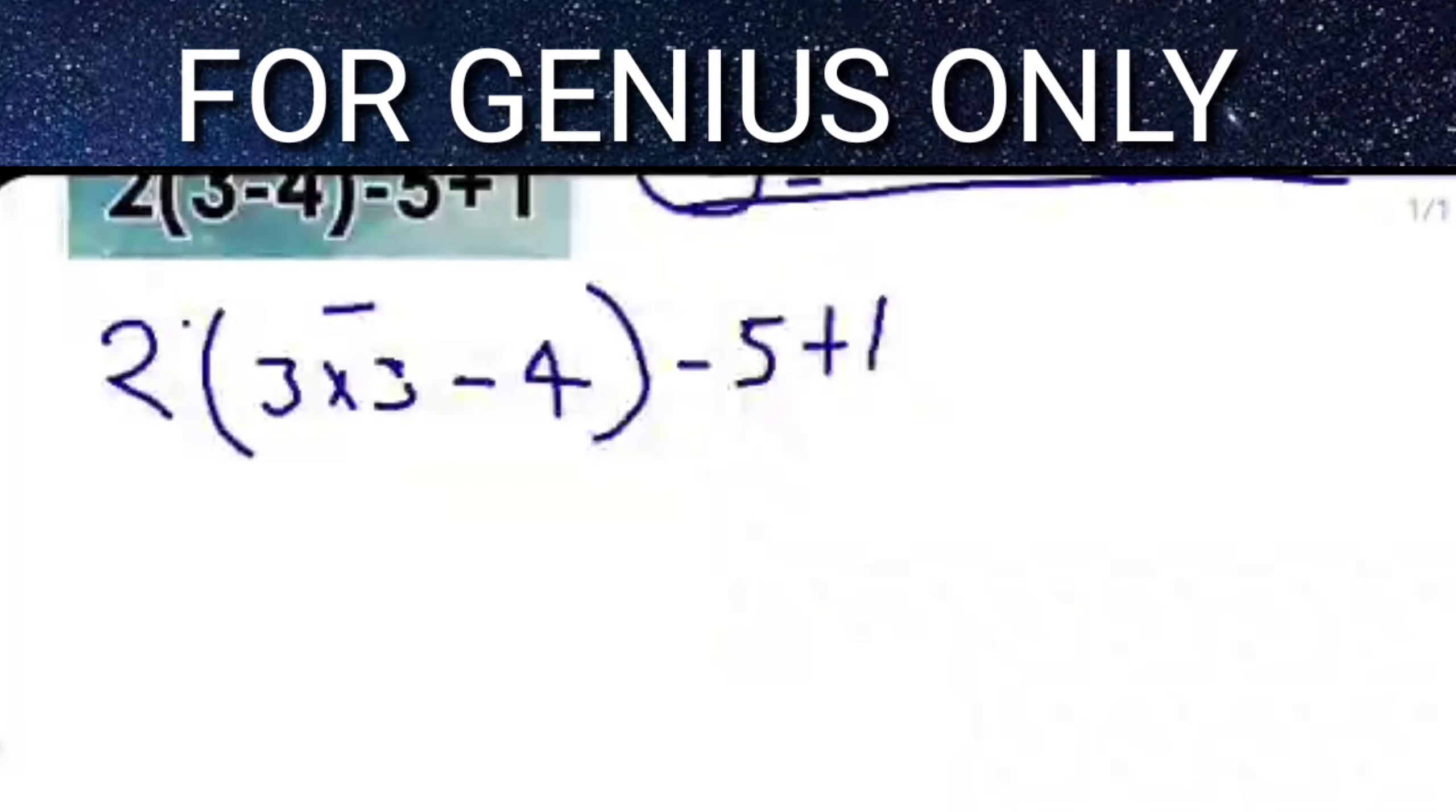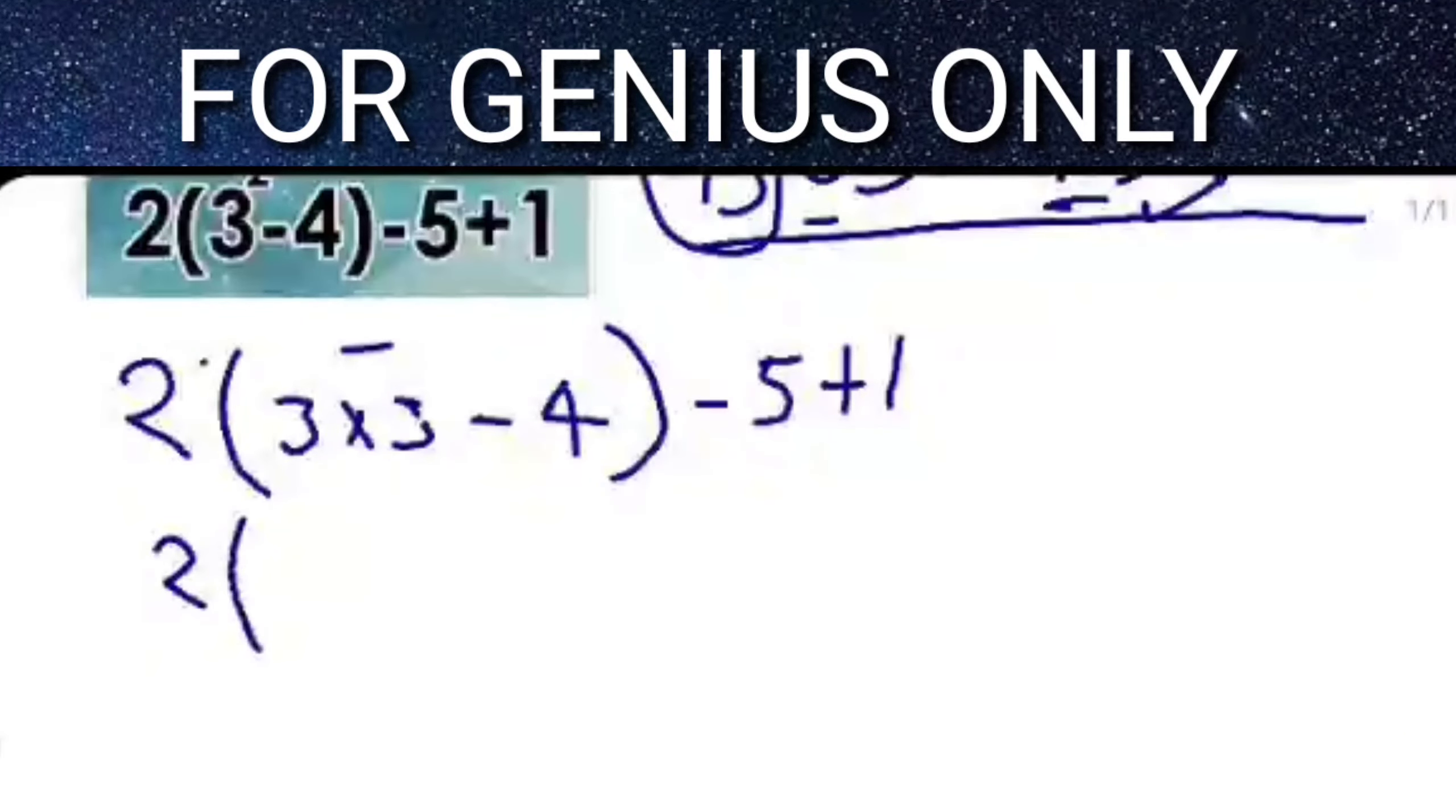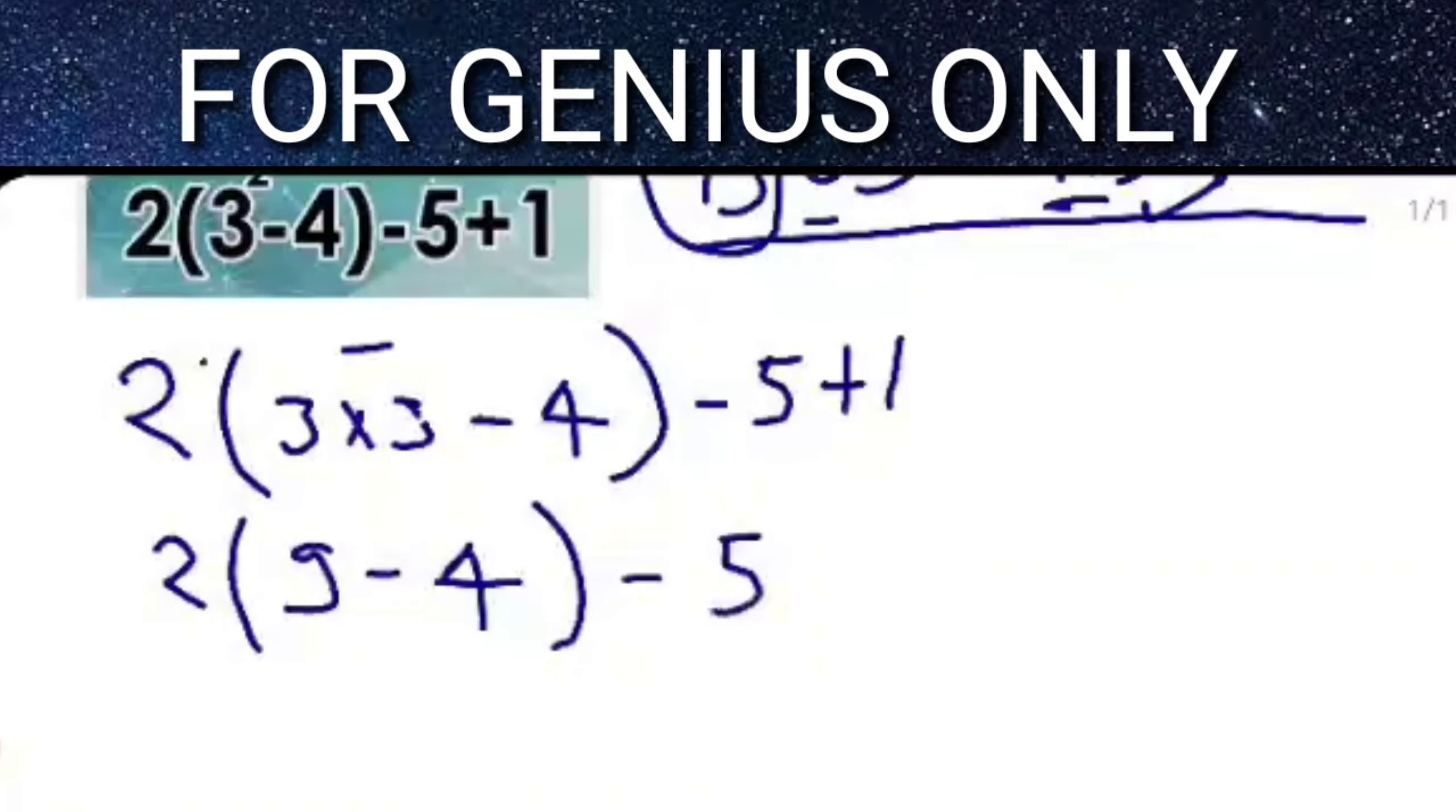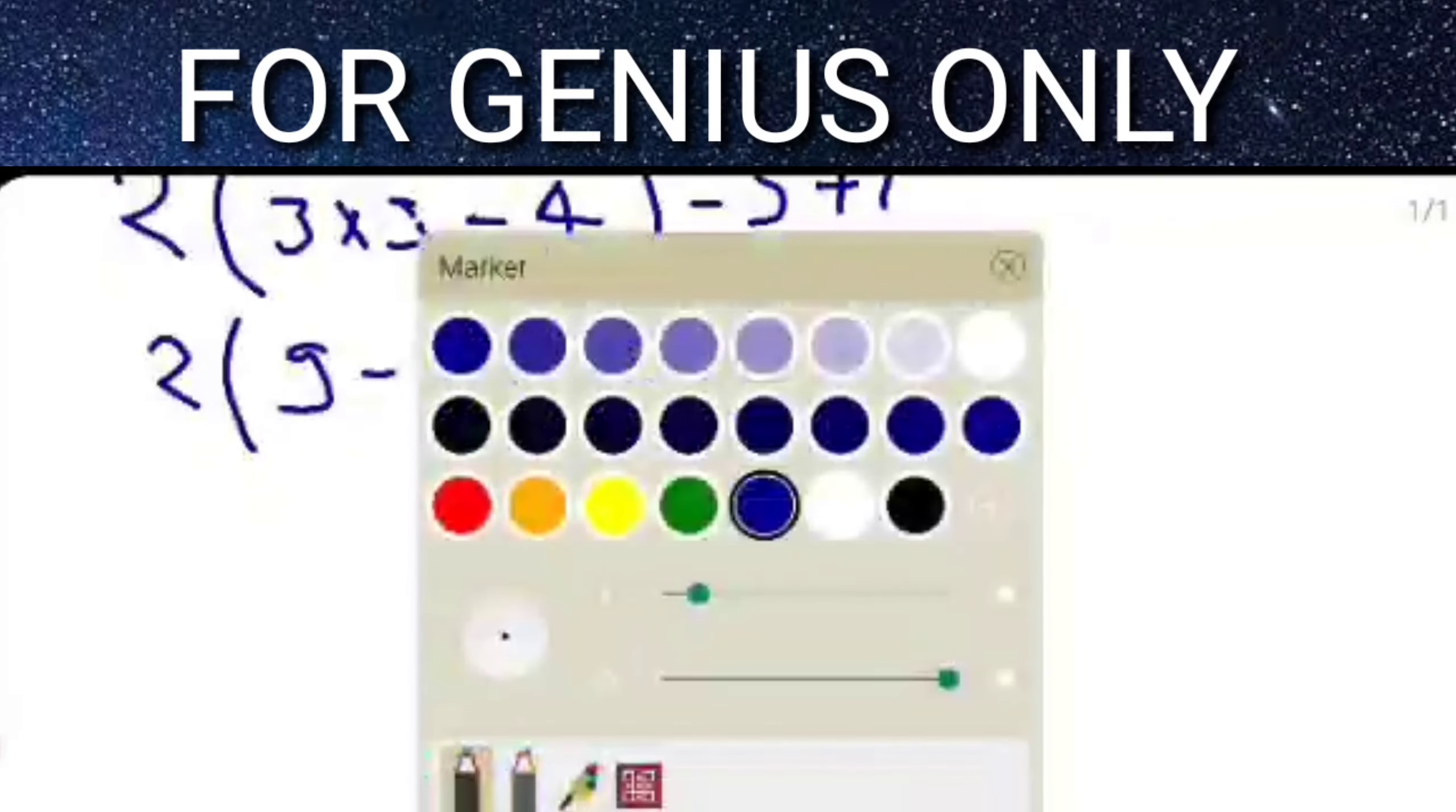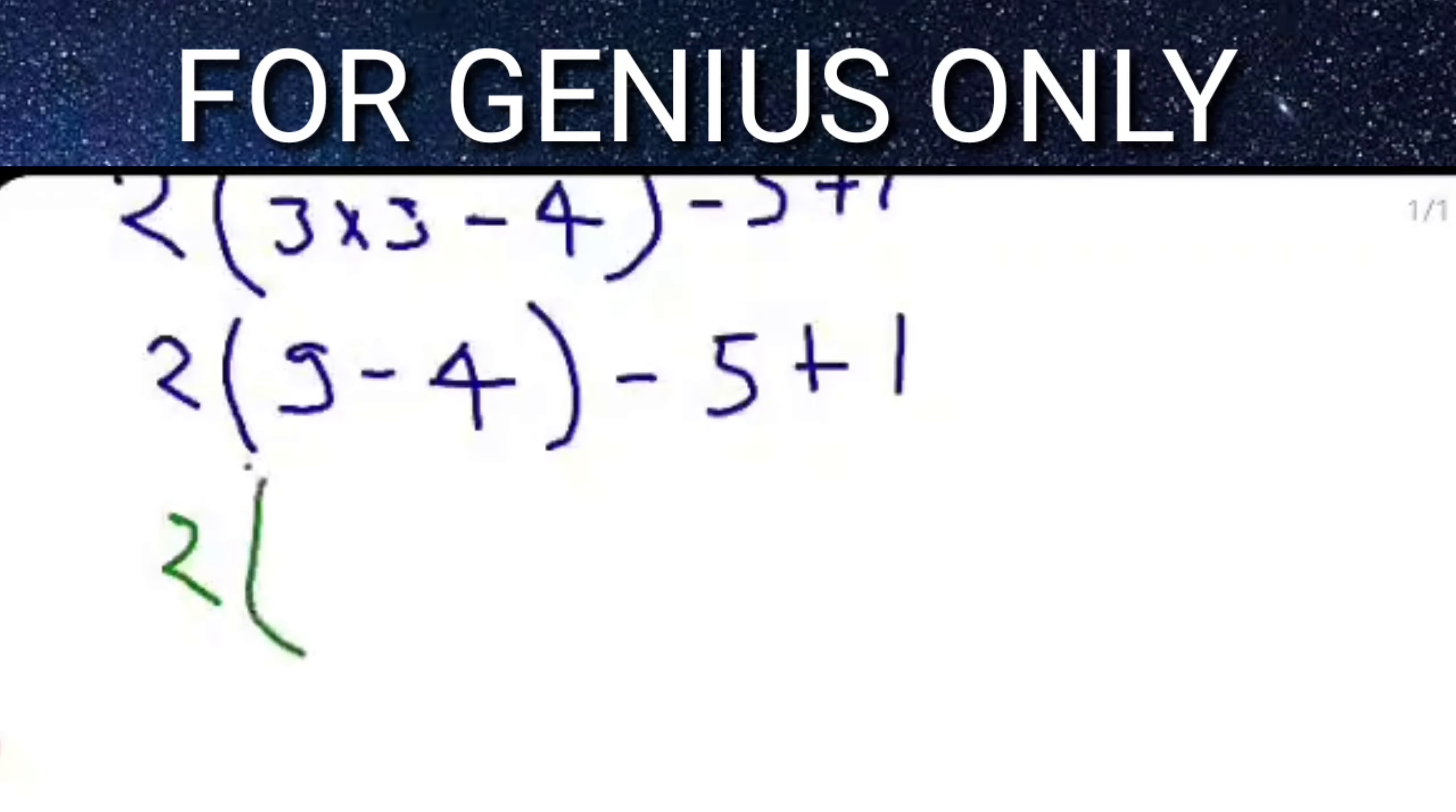So friends, now you can watch how it works: 2 multiply, 3 into 3 equals 9 minus 4, which is 5, close bracket, minus 5 plus 1.